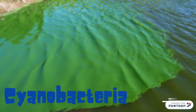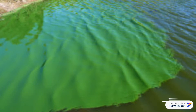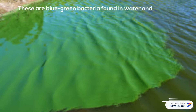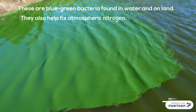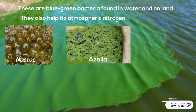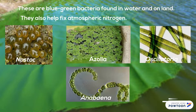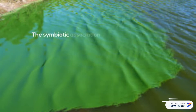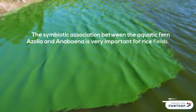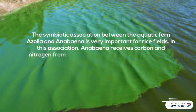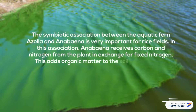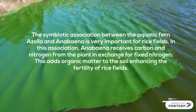Cyanobacteria are blue-green bacteria found in water and on land. They also help fix atmospheric nitrogen. Examples include Nostoc, Azolla, Oscillatoria, and Anabaena. The symbiotic association between the aquatic fern Azolla and Anabaena is very important for rice fields. In this association, Anabaena receives carbon and nitrogen from the plant in exchange for fixed nitrogen, adding organic matter to the soil and enhancing the fertility of rice fields.